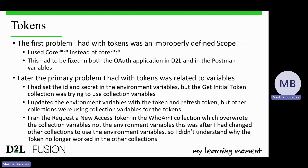The real problems began with the tokens. The tokens are the key to APIs connecting to D2L and I had a very difficult time getting the tokens to work consistently. The first problem I had with tokens was the incorrectly defined scope. This had to be corrected both in D2L and in the Postman variable. Again, if I had read the text and seen that the scope needed to be in all lowercase, I would not have had the problem where I used mixed case.